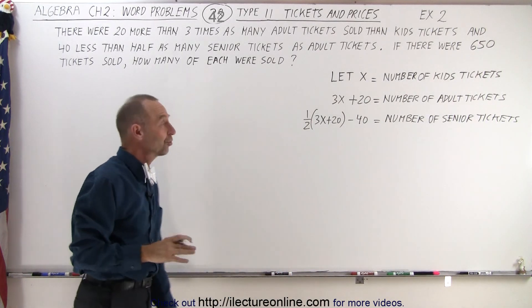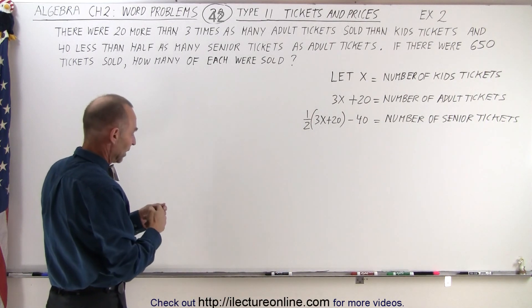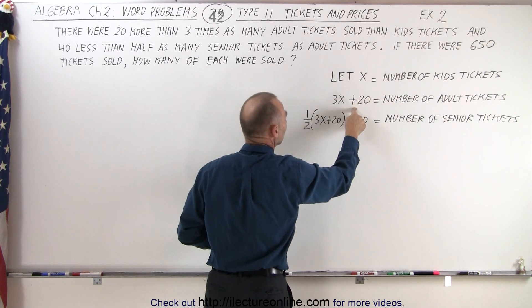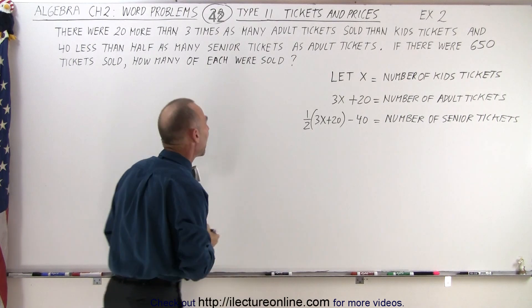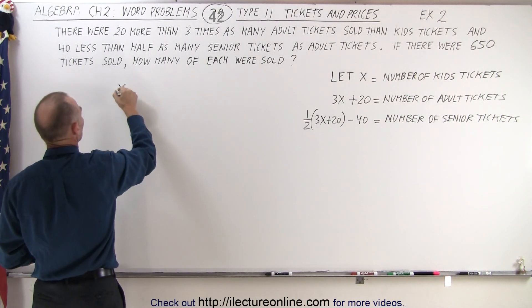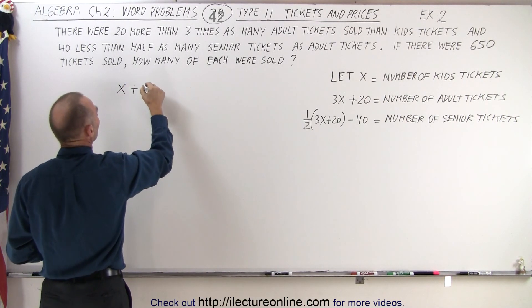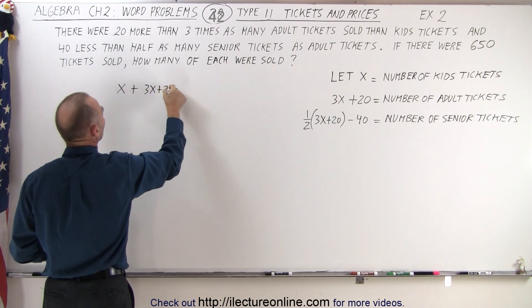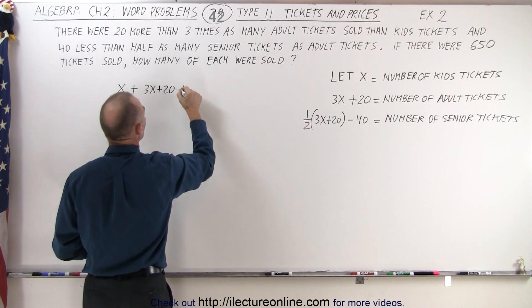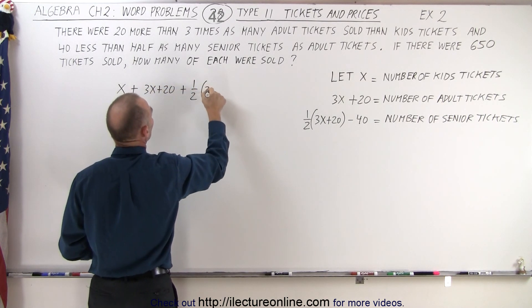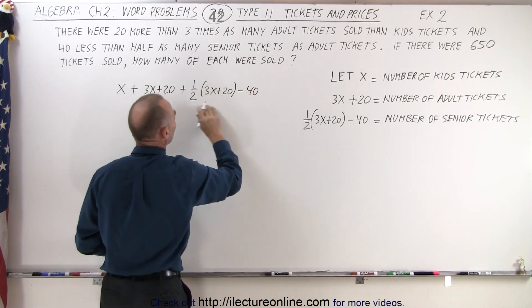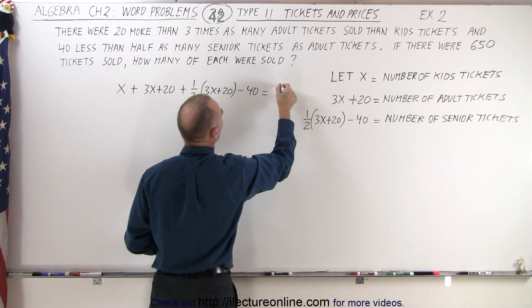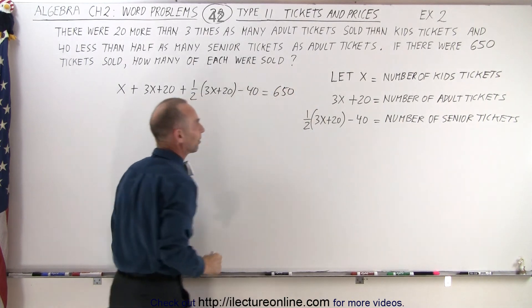Now we're ready to come up with an equation. If we add up all the kids tickets plus all the adult tickets plus all the senior tickets, that should add up to the total number of tickets that we have. So therefore x, the number of kids tickets, plus 3x plus 20, the number of adult tickets, plus one half (3x + 20) minus 40, the number of senior tickets, equals the total number of tickets sold of 650.